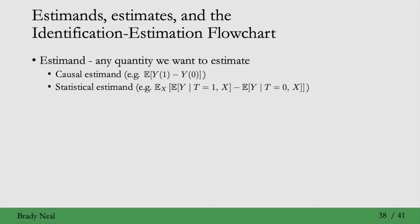In contrast, a Statistical Estimand does not contain causal concepts. It doesn't contain potential outcomes, for example. So it just contains things like conditional expectations, and the adjustment formula gives us a quantity that is a statistical estimate.